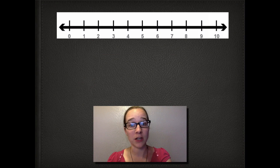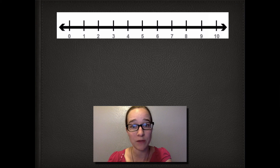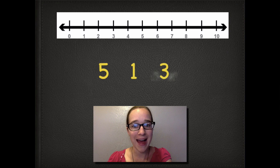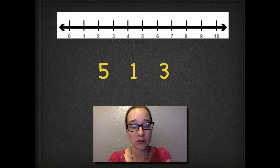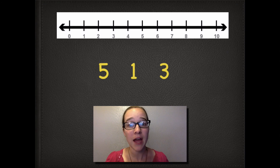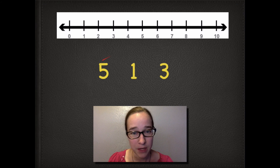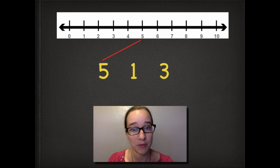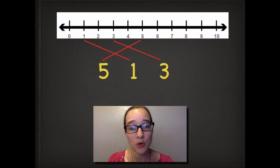I'm going to start by putting up our number line at the top. You can see numbers 0 through 10 in order: 0, 1, 2, 3, 4, 5, 6, 7, 8, 9, and 10. Then I'm going to put three numbers down: number 5, number 1, number 3. They are not in order. We're going to look at number 5 and find it on the number line and draw a line to that place. Number 5 is connected to the 5 on the number line. We'll do the same with number 1 and number 3.